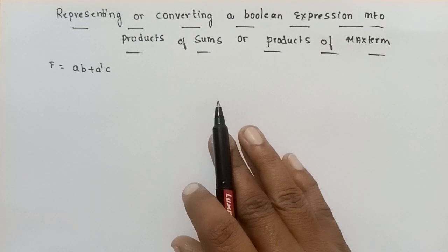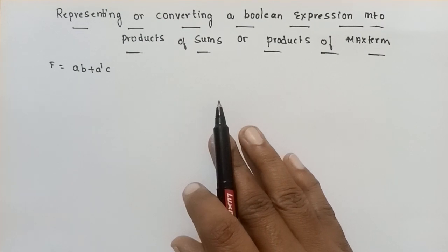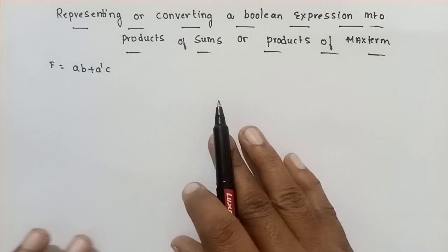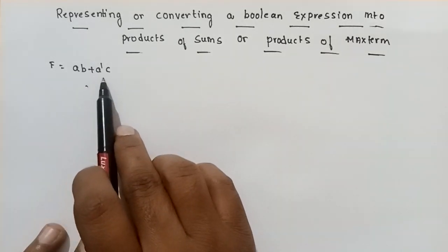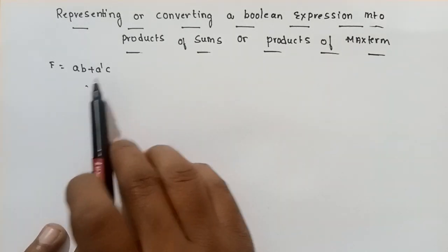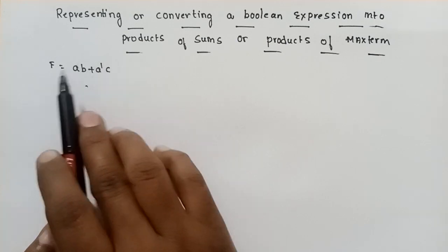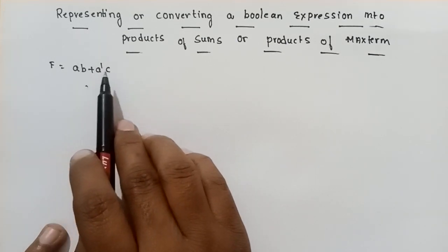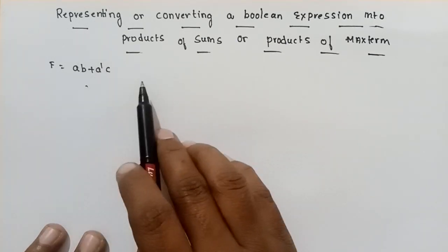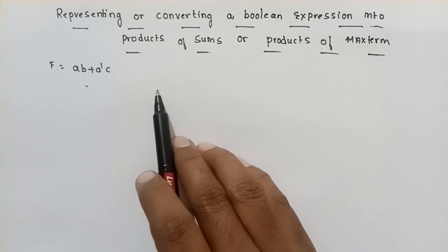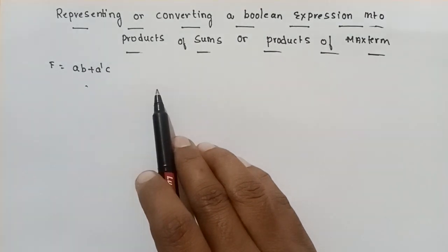In every maxterm, we have variables — a variable and its complement. We will discuss the expression F equals ab plus a'z, which is a function of a, b, c variables. We will now discuss the Products of Sum form.